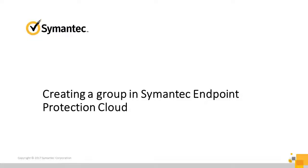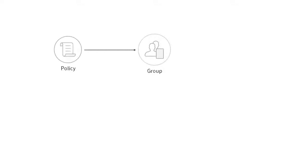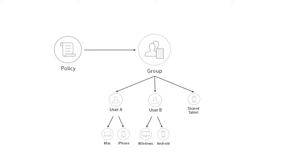In this video, you'll learn how to create a group in Semantic Endpoint Protection Cloud. Groups define how policy settings flow to your devices. Policies are always applied to groups, not to individual users or devices, and all members of the group inherit the policy settings.